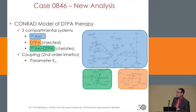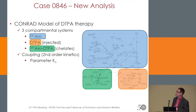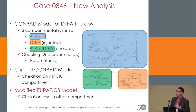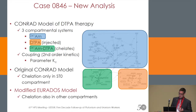A big issue in this modeling is we use moles instead of becquerels because of the stoichiometry behind the chemistry. We have different orders of magnitude — we are in the picomoles range for americium and in the millimoles range for DTPA, so the numerics gets a bit difficult. In the original Konrad model, developed during a European project, we assumed that chelation only takes place in the ST0 compartment, which is assumed to be the extracellular fluids.